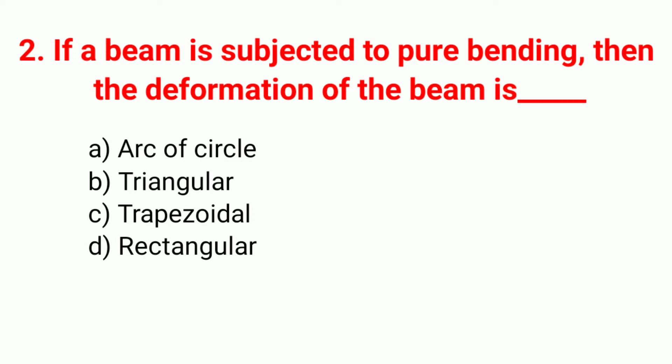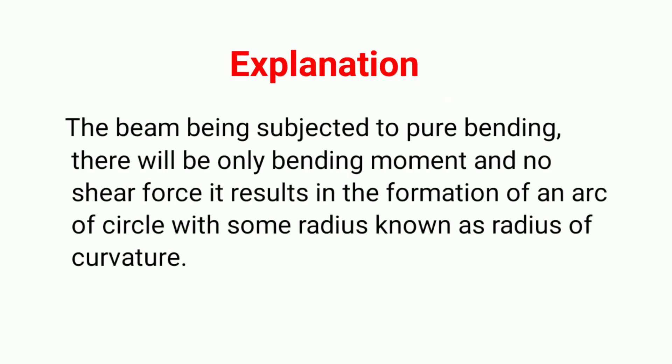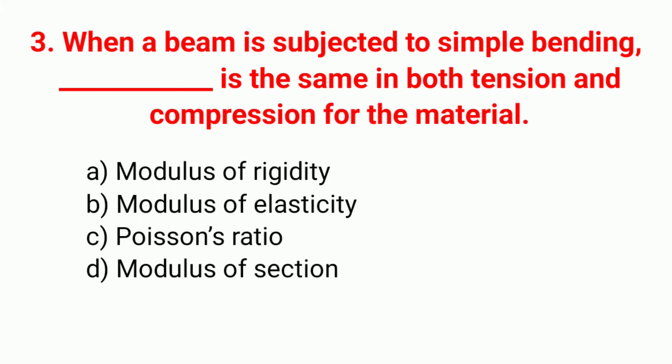Question 2: If a beam is subjected to pure bending, then the deformation of the beam is — your right answer is option A, arc of circle. Explanation: when a beam is subjected to pure bending, there will be only bending moment and no shear force. This results in the formation of an arc of circle with some radius known as the radius of curvature.